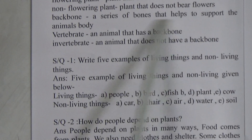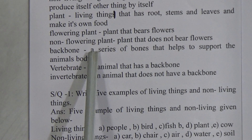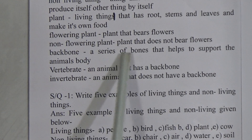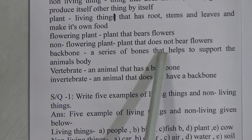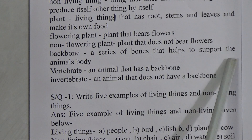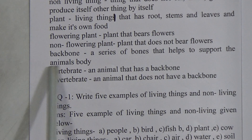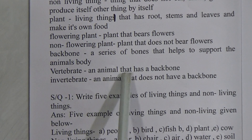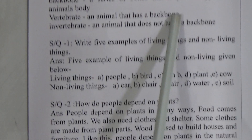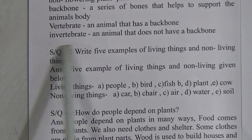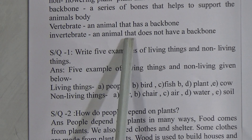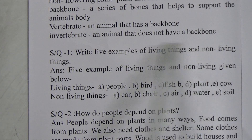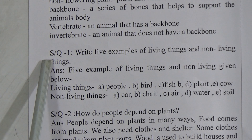Sorry students, the correct definition for backbone is: a series of bones that helps to support the animal's body. Next, 'vertebrate': an animal that has a backbone. 'Invertebrate': an animal that does not have a backbone.